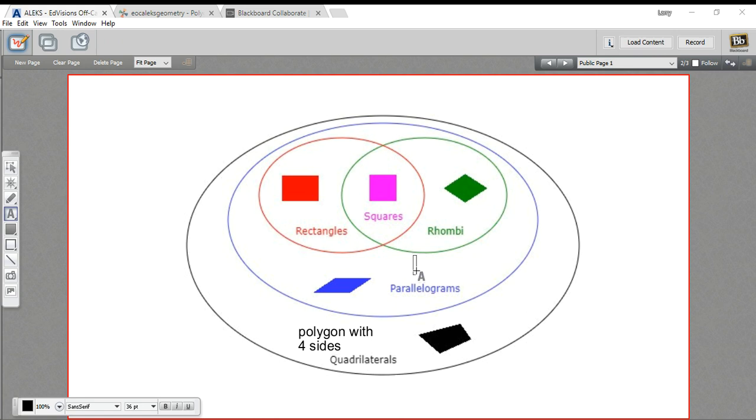A parallelogram is a quadrilateral, so it has that quality—it's a polygon with four sides. It also has an additional quality: it has two sets of parallel sides that are the same length. So what that means is this side and this side are the same length, and then this side and this side are the same length. Two sets of parallel sides, same length, but not necessarily the same length as each other. That's a parallelogram.